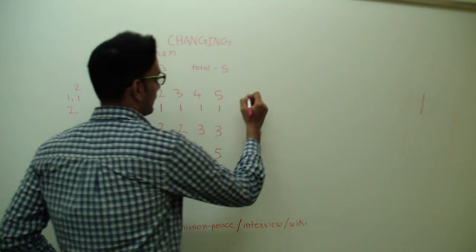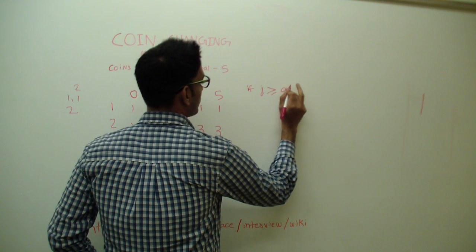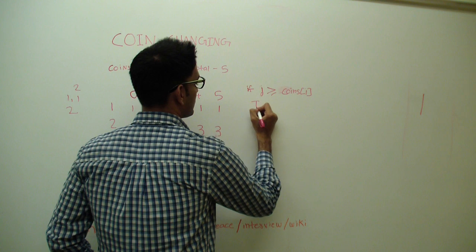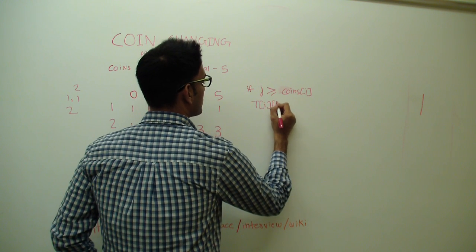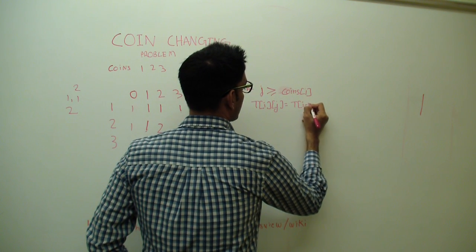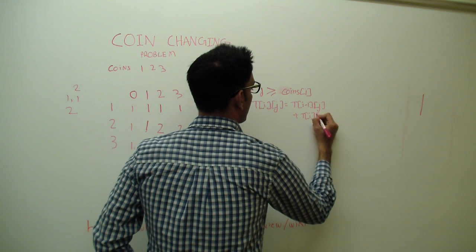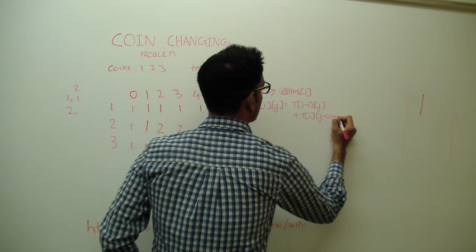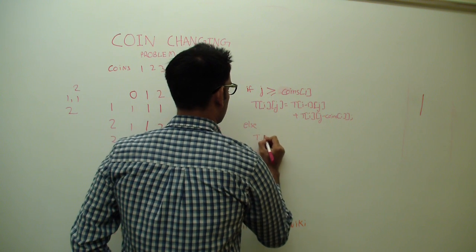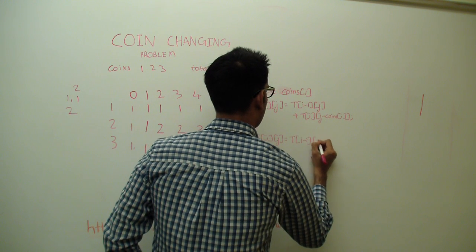What does the formula look like? If j is greater than or equal to coins[i], then t[i][j] = t[i-1][j] + t[i][j - coins[i]]. Otherwise, t[i][j] = t[i-1][j].